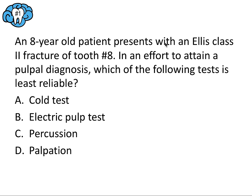Question number one: An eight-year-old patient presents with an Ellis class 2 fracture of tooth number eight. In an effort to attain a pulpal diagnosis, which of the following tests is least reliable? An Ellis class 2 fracture involves both the enamel and dentin layers, but that's not relevant to the question being asked, which is about diagnostic testing. Vitality testing is unreliable for two to eight weeks following a traumatic injury, so we can narrow our choices to either A or B, because C and D aren't vitality tests.